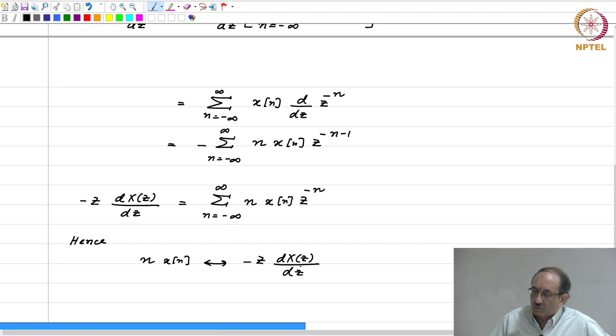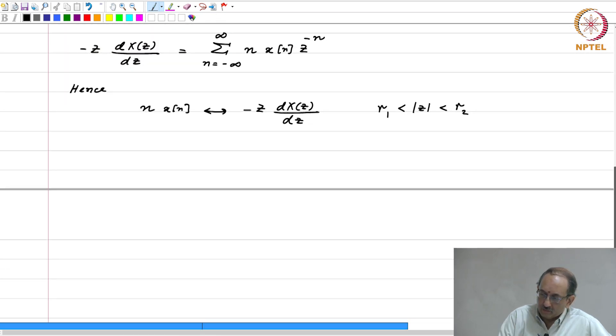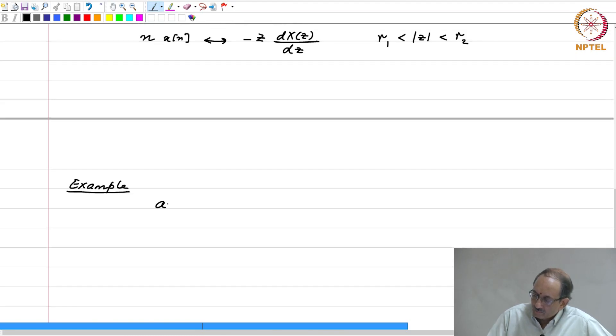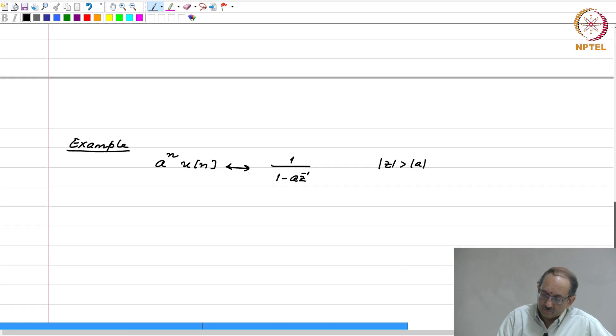And ROC, when you have rational X of Z, the ROC does not change. And we will apply this to this particular example. We will start off with our usual a to the n u of N. So, this is 1 by 1 minus a z inverse mod z greater than mod a and then let us look at minus z times dx by dz of the Z-transform.